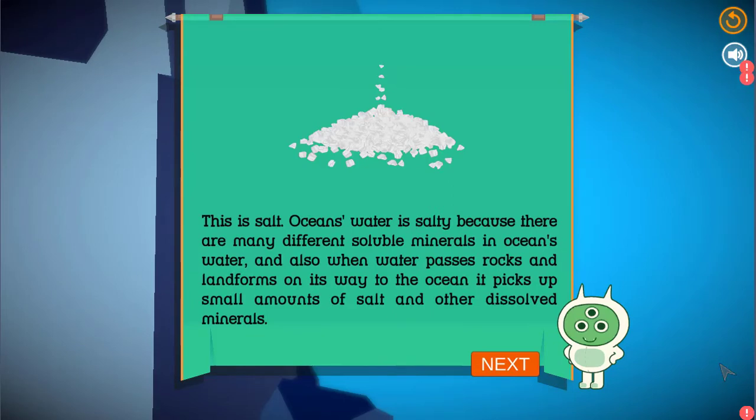This is salt. Ocean's water is salty because there are many different soluble minerals in ocean's water, and also when water passes rocks and landforms on its way to the ocean it picks up small amounts of salt and other dissolved minerals.